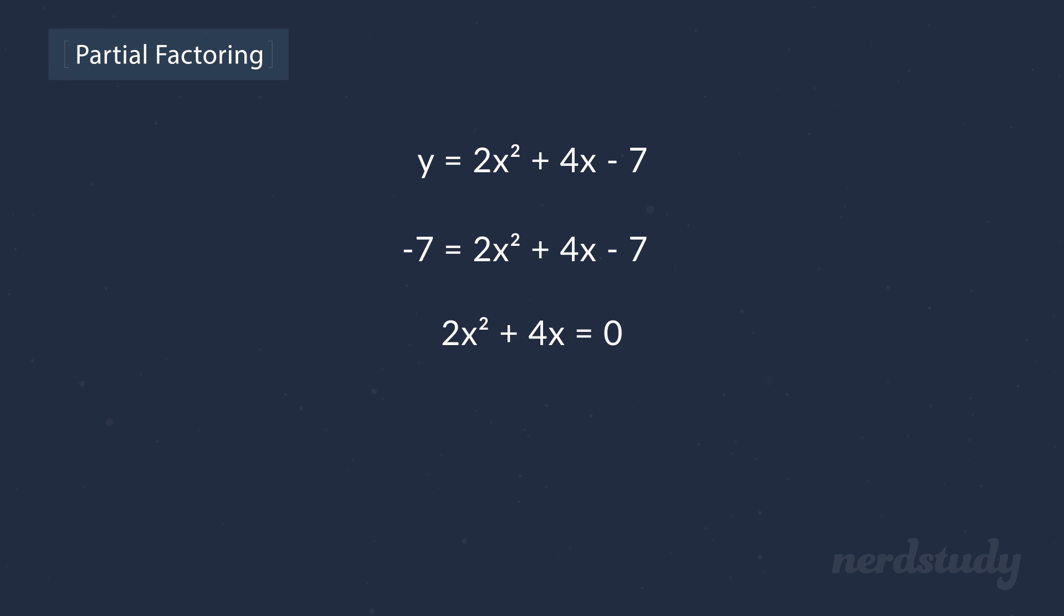First let's rearrange this, and if we factor out the 2x from both these terms, we'd get 2x multiplied by x plus 2 equals 0. Now we want to find the x values of this equation that produces a 0, or shall I say the roots of this equation, which we can say are when x equals 0 or when x equals minus 2.